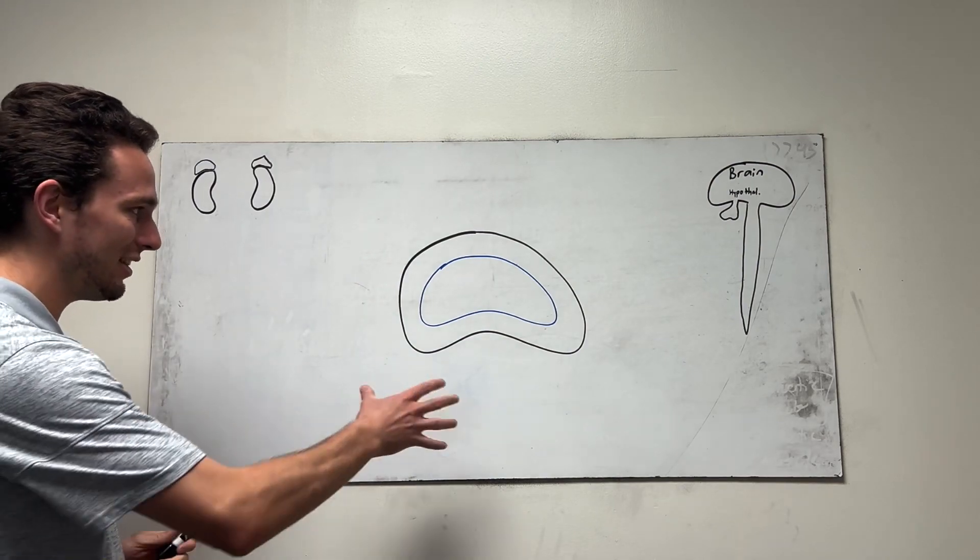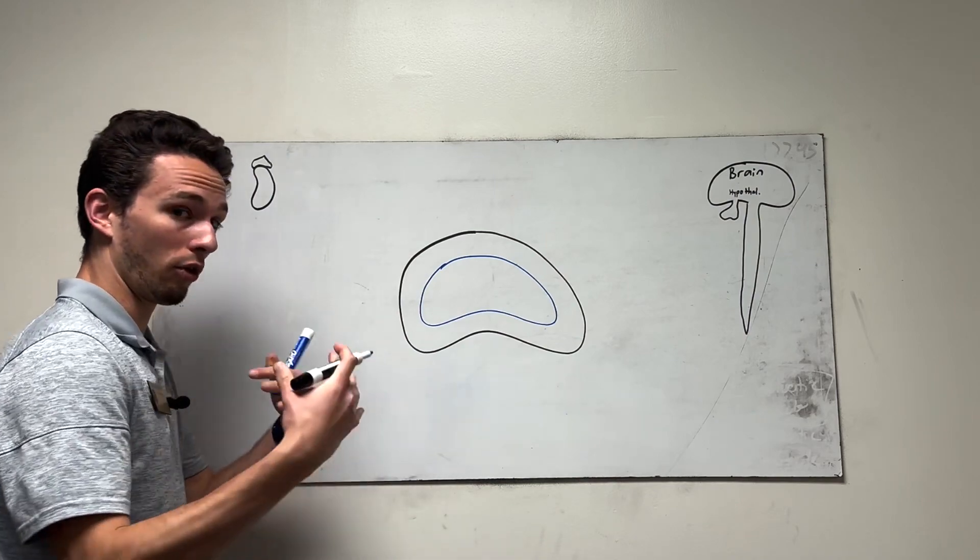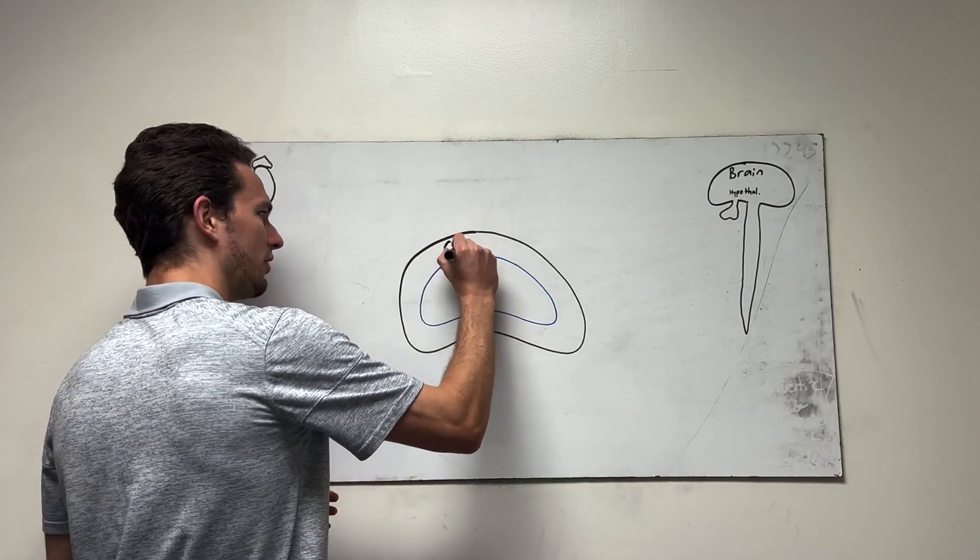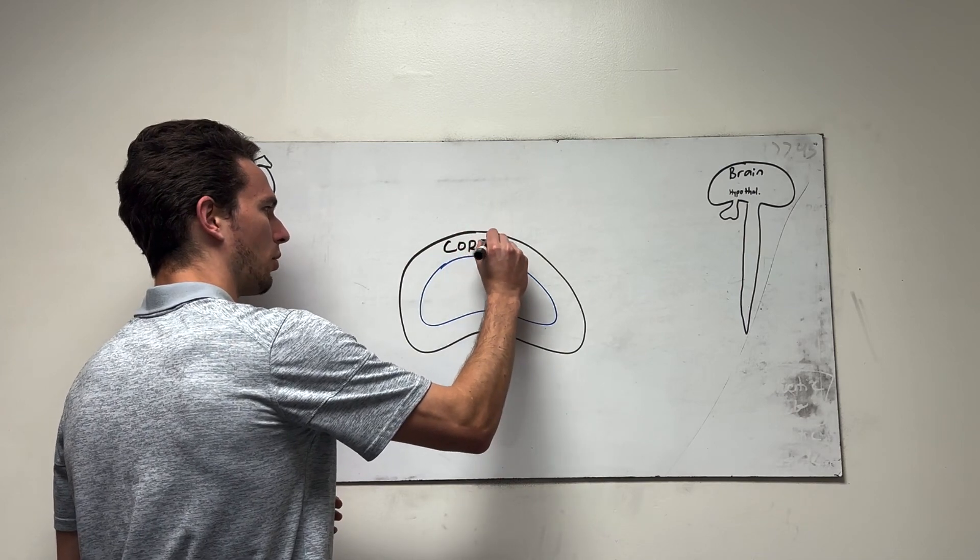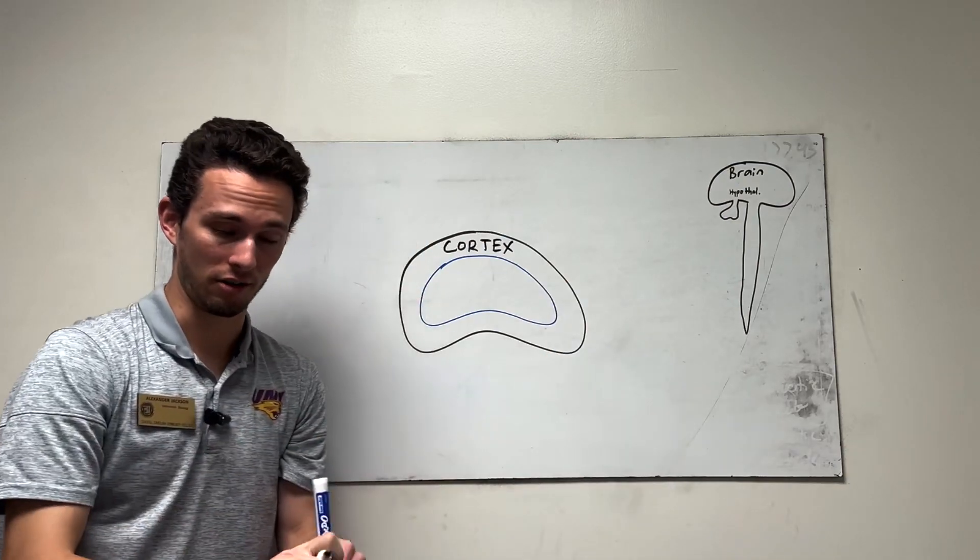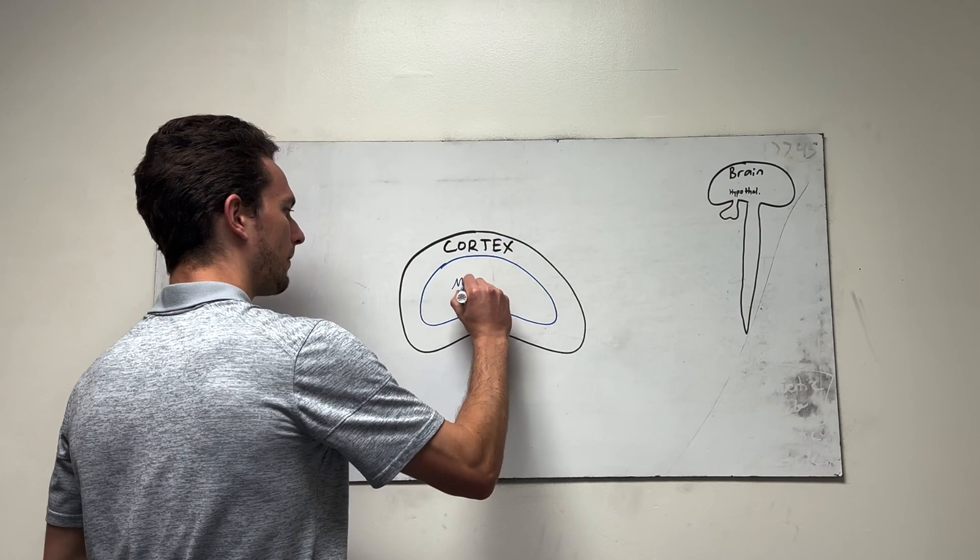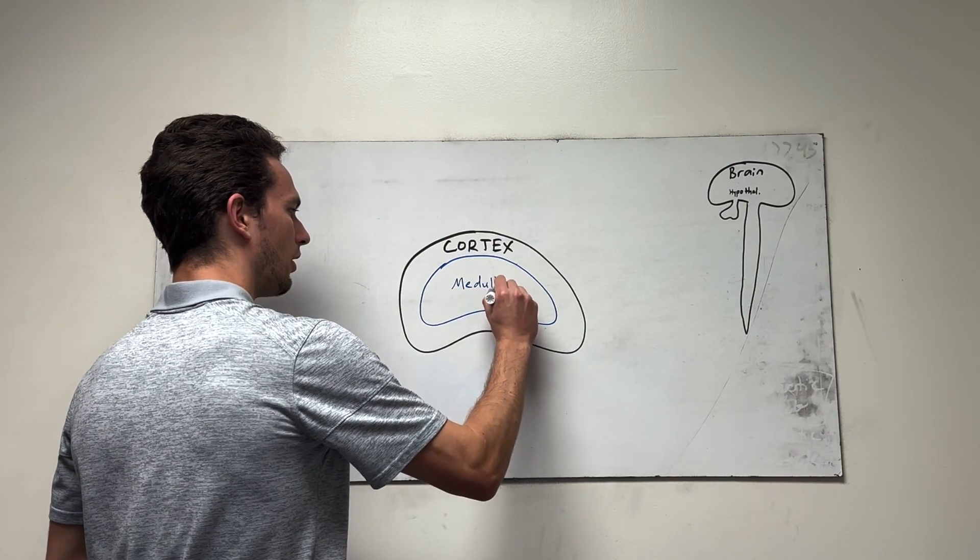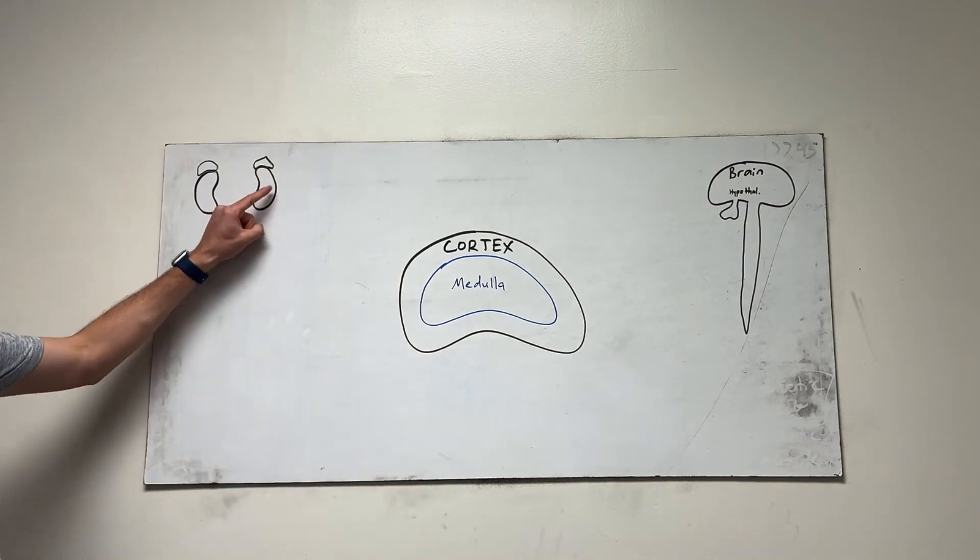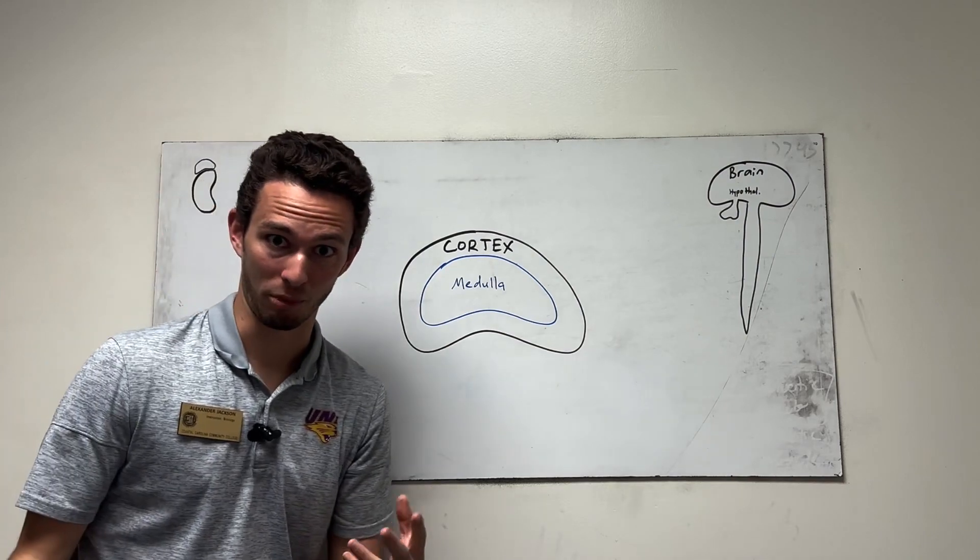But first, in the adrenal gland itself, we separate it out into two main parts because those two parts will have different hormones that they'll be secreting. So the first part on the outside is obviously called the cortex. Anytime we use the word cortex, whether it's in the adrenal glands or the brain, it's on that outer layer, right? And then on the inside, we're going to call this the medulla. And that's the same thing in the kidneys itself. So if you look at the kidneys, we got a cortex on the outside and the inside part of the kidneys is the medulla. So they are very anatomically similar.